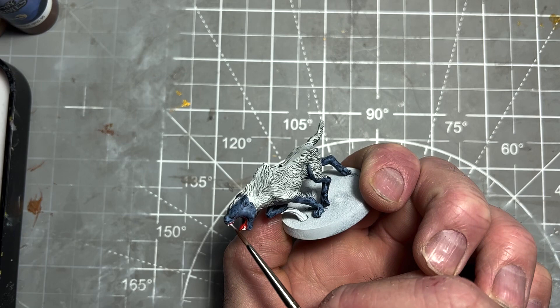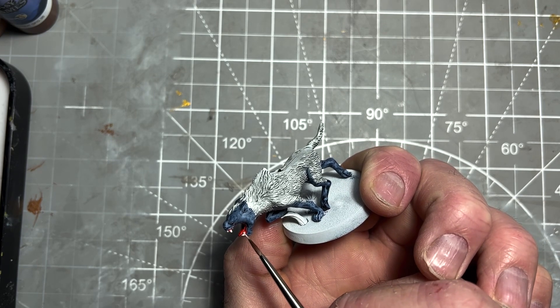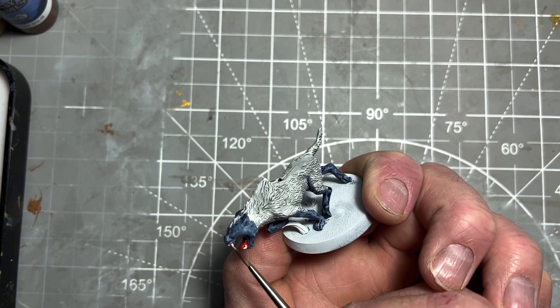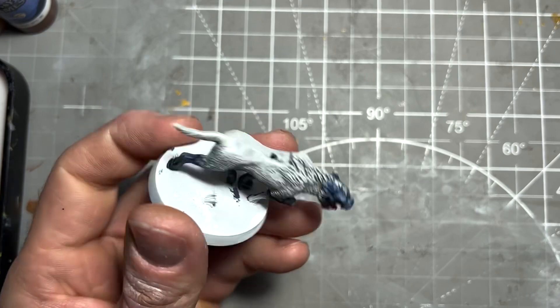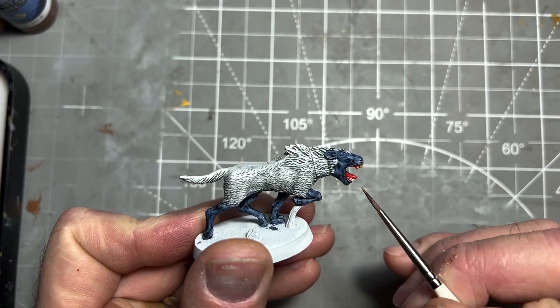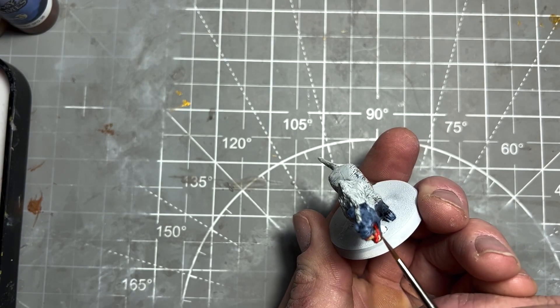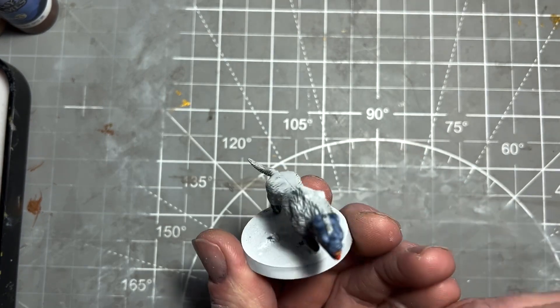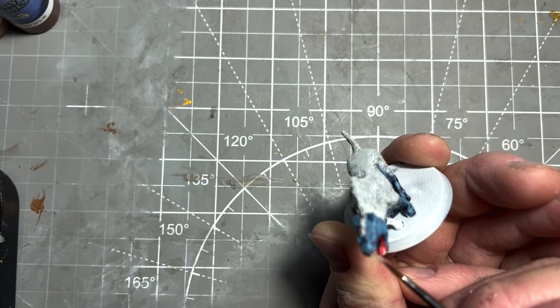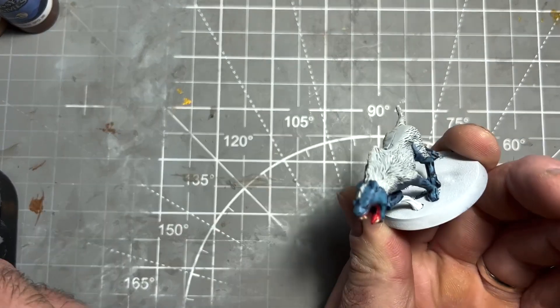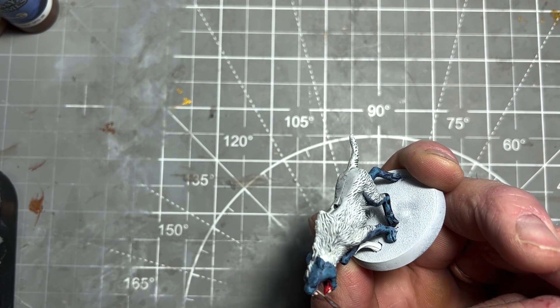If you caught any teeth with the Blood Red, go back with Purity White once it's dried and touch them up. Then, go over the teeth with Pallid Bone Army Painter Speed Paint to give them a more yellowy look. Once that's dry, go back over the teeth with Purity White, keeping more to the centers so the Speed Paint stays in the recesses.